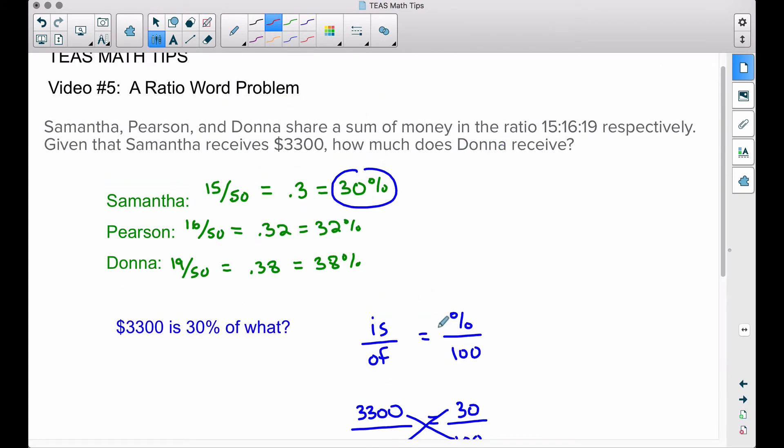So we can go back to this same setup here: is over of equals percent over 100. We know Donna's percent is going to be 38%, so I'm going to write that as 38 out of 100. Notice I'm referring back to this ratio piece that we built and eventually converted to a percent.